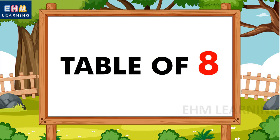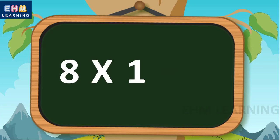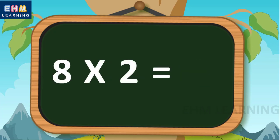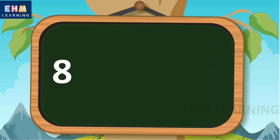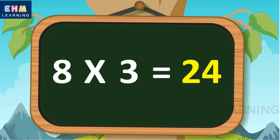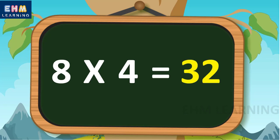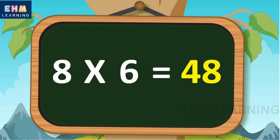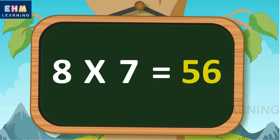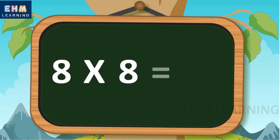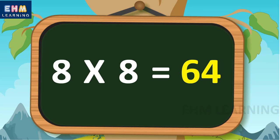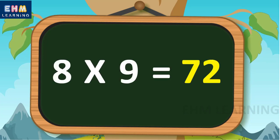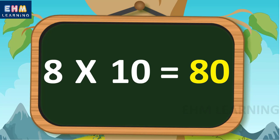Hello children, today we will learn table of eight. Eight ones are eight, eight twos are sixteen, eight threes are twenty-four, eight fours are thirty-two, eight fives are forty, eight sixes are forty-eight, eight sevens are fifty-six, eight eights are sixty-four, eight nines are seventy-two, eight tens are eighty.